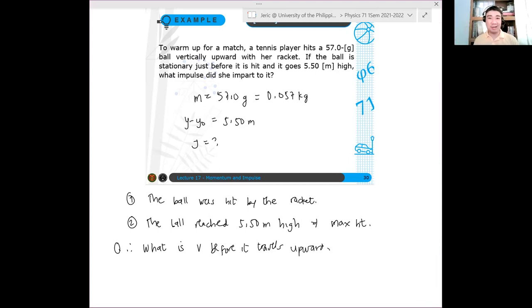In projectile motion, we always say the only force acting on the object is gravity. So how did the ball get an initial velocity? Right? This is where that gets cleared up.